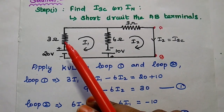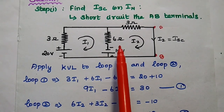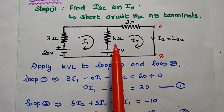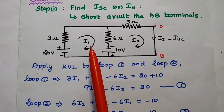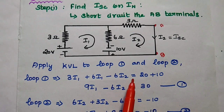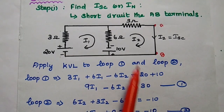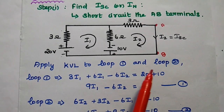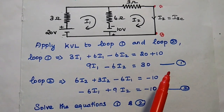Taking the voltage drops first: the drop across 3 ohm is I1 × 3, and across 6 ohm is 6 × (I1 − I2), since the 6 ohm resistor carries I1 in the forward direction and I2 in the reverse direction. So the sum of voltage drops is 3I1 + 6I1 − 6I2. The sum of voltage rises is −2 + 20 + 10 + 10 = 30 volts. Therefore the first equation is: 9I1 − 6I2 = 30.